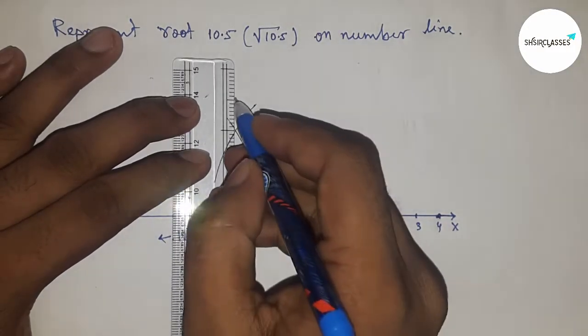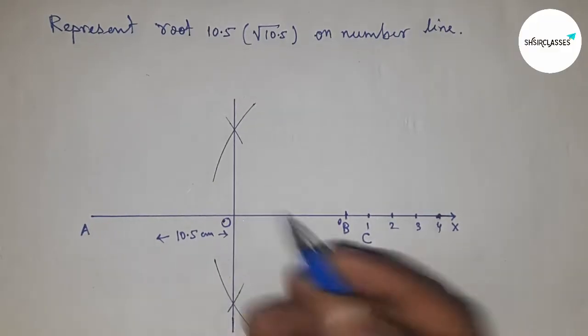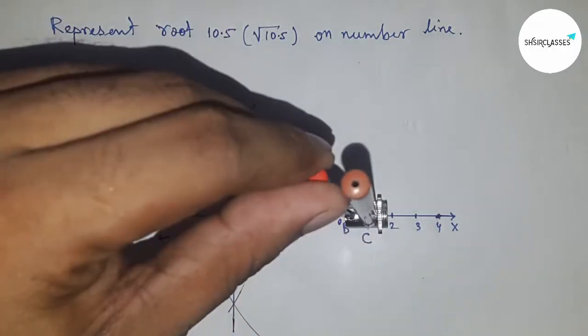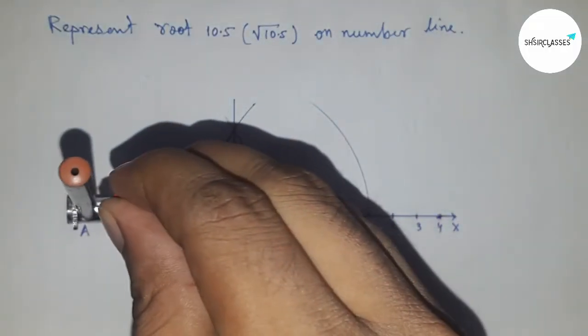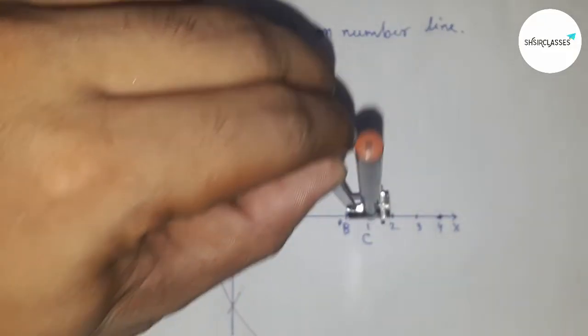Next, join these which cut the number line and which cut the line AC at point O. Next, put the compass on point O and draw a semicircle by this way. So this is a semicircle.